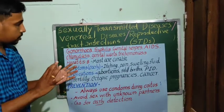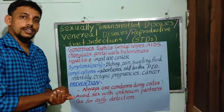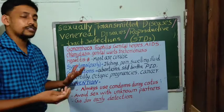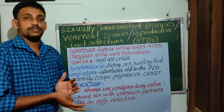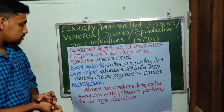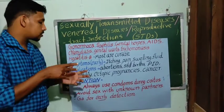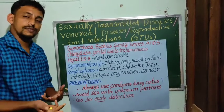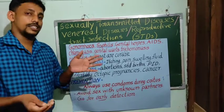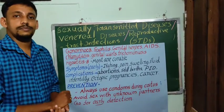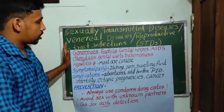Sexually transmitted diseases can be prevented by taking some precautions. Always use condoms during sexual intercourse. Avoid sex with unknown partners or multiple partners. If any minor symptoms arise, go for early detection and take the required treatments promptly.